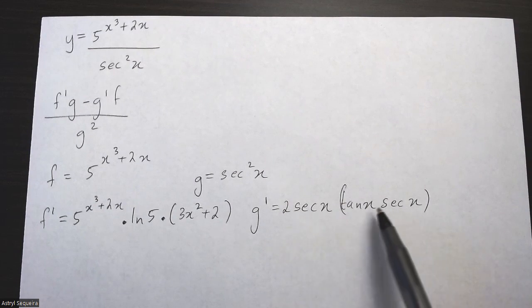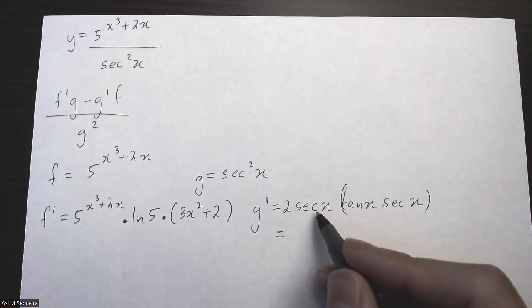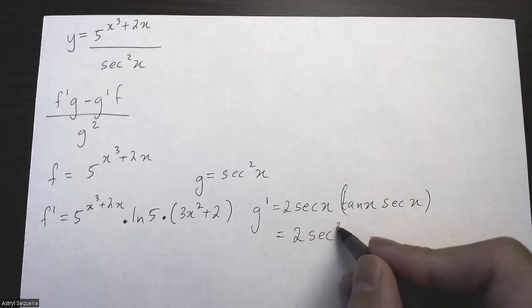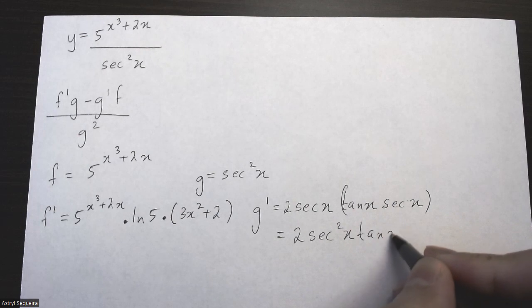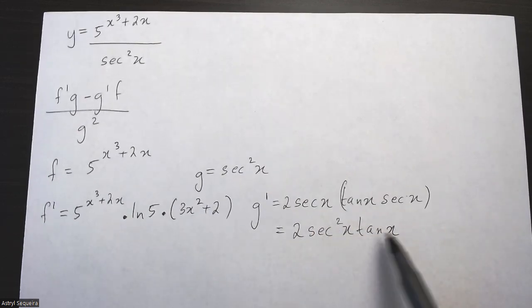I can actually simplify this, because sec times sec is just sec squared x. So the derivation of sec squared x is 2 sec squared x tan x.